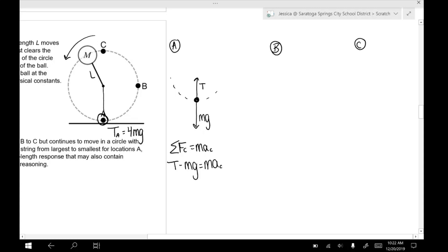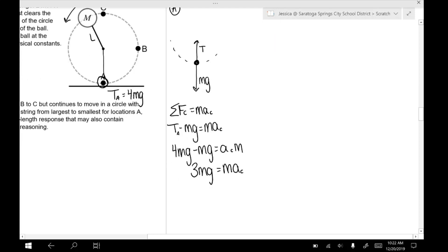Okay, and we already know that the tension at A, according to the problem, is 4mg. So we could simplify this and see that the centripetal force or net force is 3mg. Okay, of course, the m's can cancel. So we can actually see that our centripetal acceleration is 3 times the acceleration due to gravity. So if you've ever heard of something referred to in terms of g's, this would be 3 g's. So you'd be feeling an acceleration 3 times that of gravity.